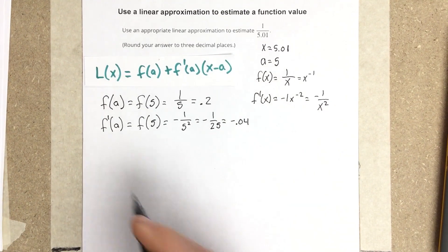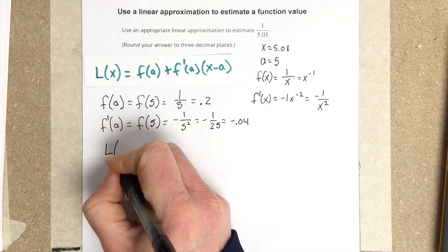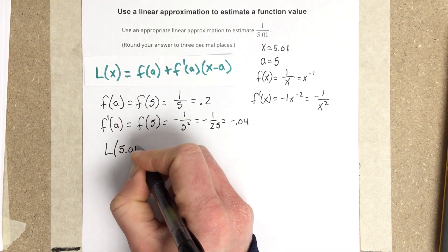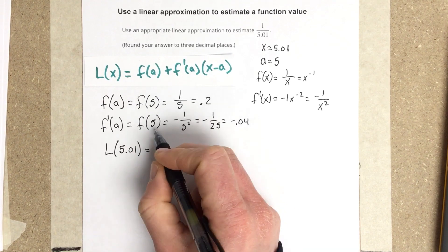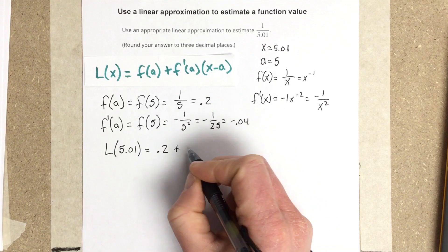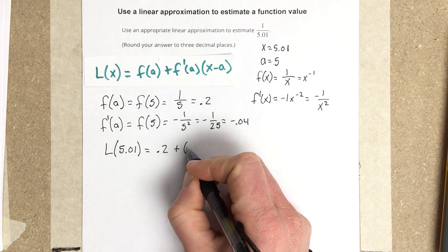So then I'm going to use both of those in my equation. And when I find the linearization of 5.01, that's going to equal f of a, which is 0.2, plus f prime, which is, I'm going to say negative 0.04.